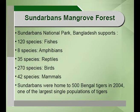The Sundarbans were home to 500 Bengal tigers in 2004, one of the largest single populations of tigers. But now tigers are being poached and destroyed for their skin. That is why we need to protect the tiger populations in wild nature, in national reserves and parks.